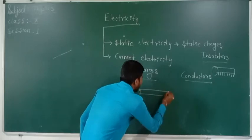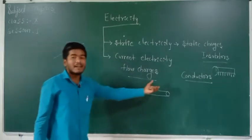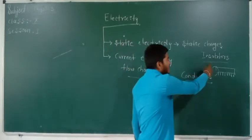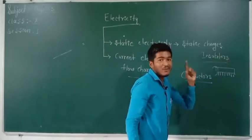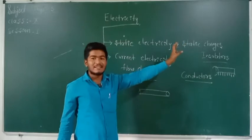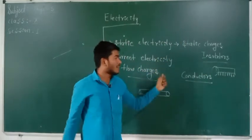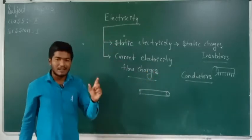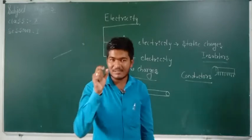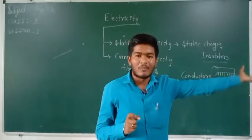Why do the charges flow? Because these are metals. All conductors are metals, and all insulators are non-metals. However, there is one exception: graphite is a non-metal, but it conducts current. So graphite is a conductor but comes under non-metals.